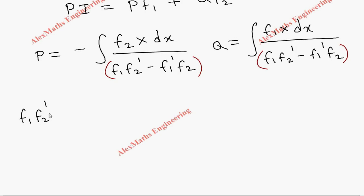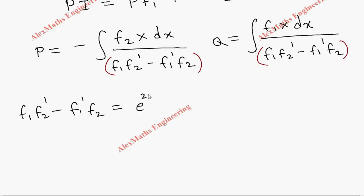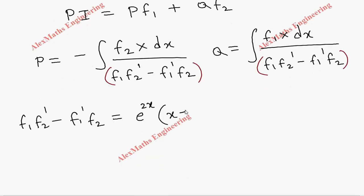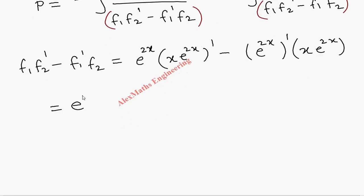We calculate the denominator: f1 f2' minus f1' f2. f1 is e^(2x), f2 is x e^(2x). For f2' we apply the product rule: derivative of x e^(2x) is x times 2e^(2x) plus e^(2x) times 1. f1' is the derivative of e^(2x), which is 2e^(2x).